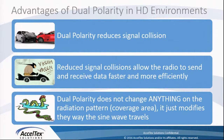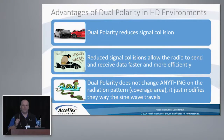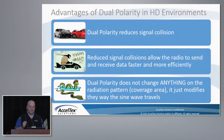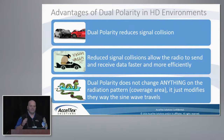The advantages of a dual polarity antenna in a high-density environment: dual polarity reduces the amount of signal collision going out to the field. Reduced signal collisions allow the radio to send and receive data faster and more efficiently to the client. The main takeaway is that dual polarity doesn't change the radiation pattern's coverage area — it simply modifies the way the sine wave is traveling to the client device.